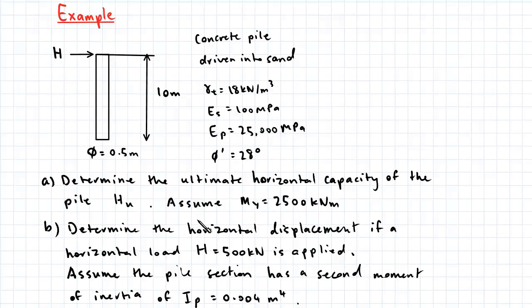Part B wants us to determine the horizontal displacement if a horizontal load of 500 kN is applied. We can also assume that the pile section has a second moment of inertia IP of 0.004 meters to the power of 4.